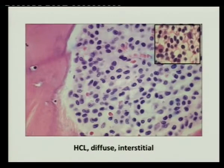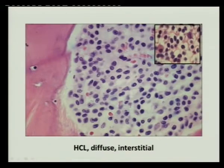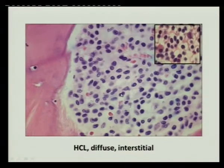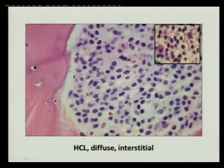This is the typical hairy cell leukemia case with the so-called fried egg appearance — the open, pale zones are all due to hairy projections which form the cytoplasmic limits and blend with adjoining cytoplasm, giving this pale halo around the nuclei.